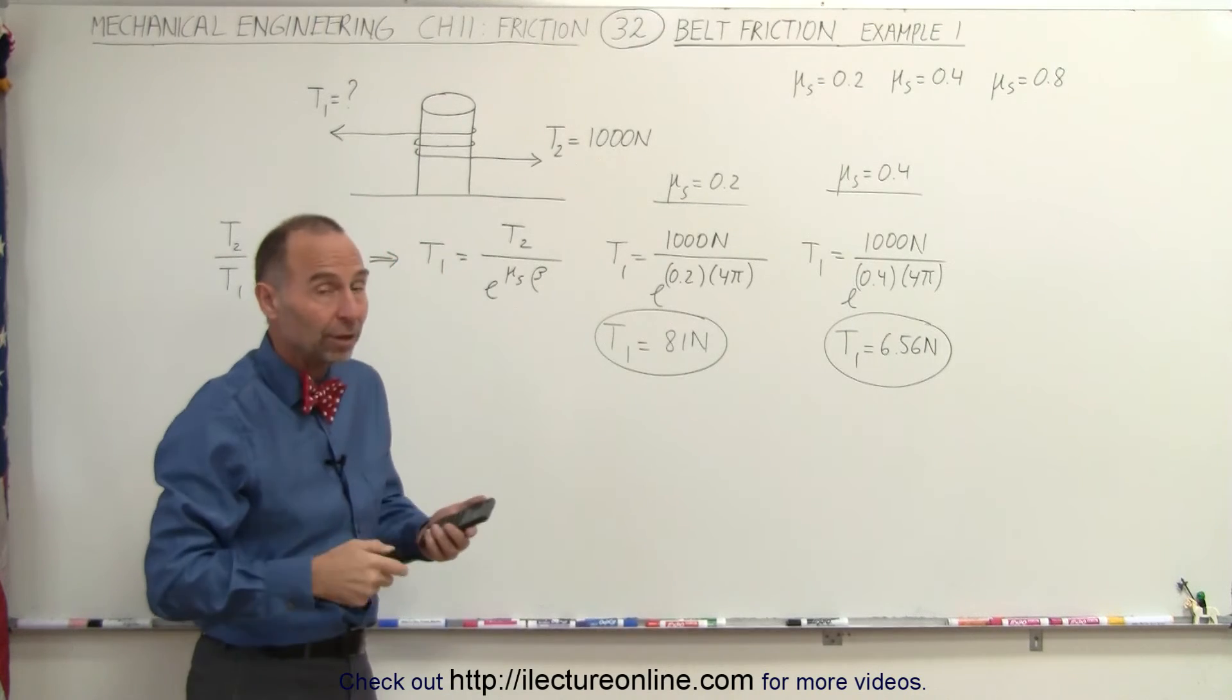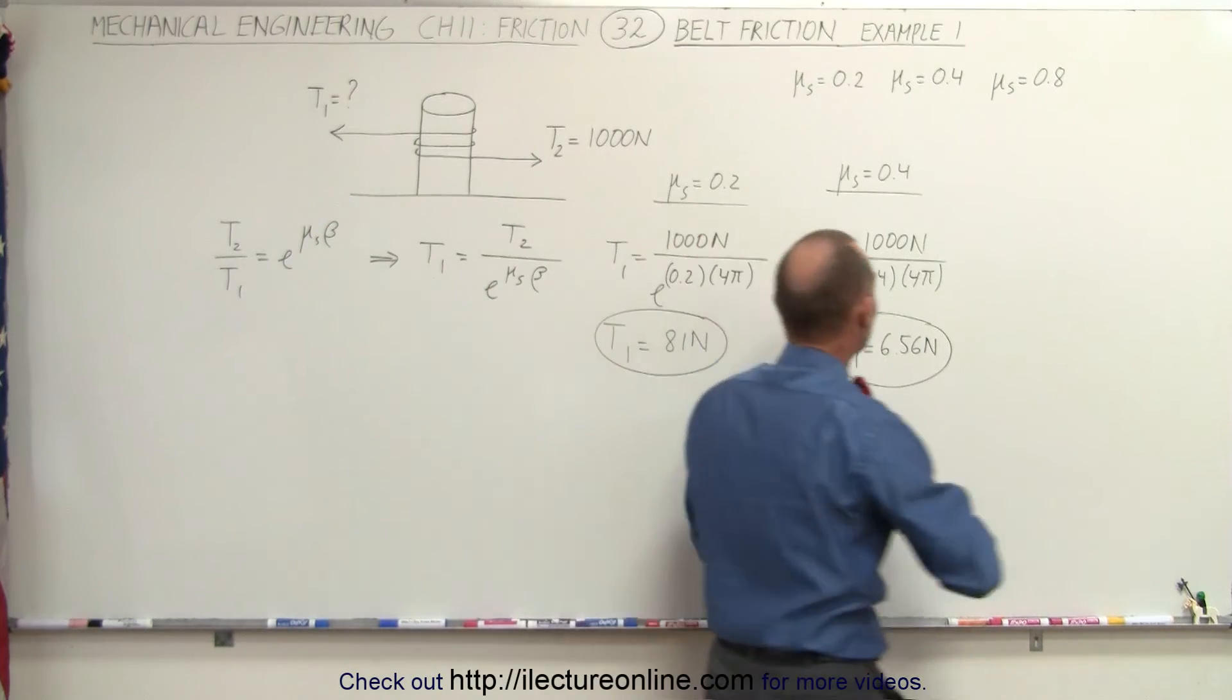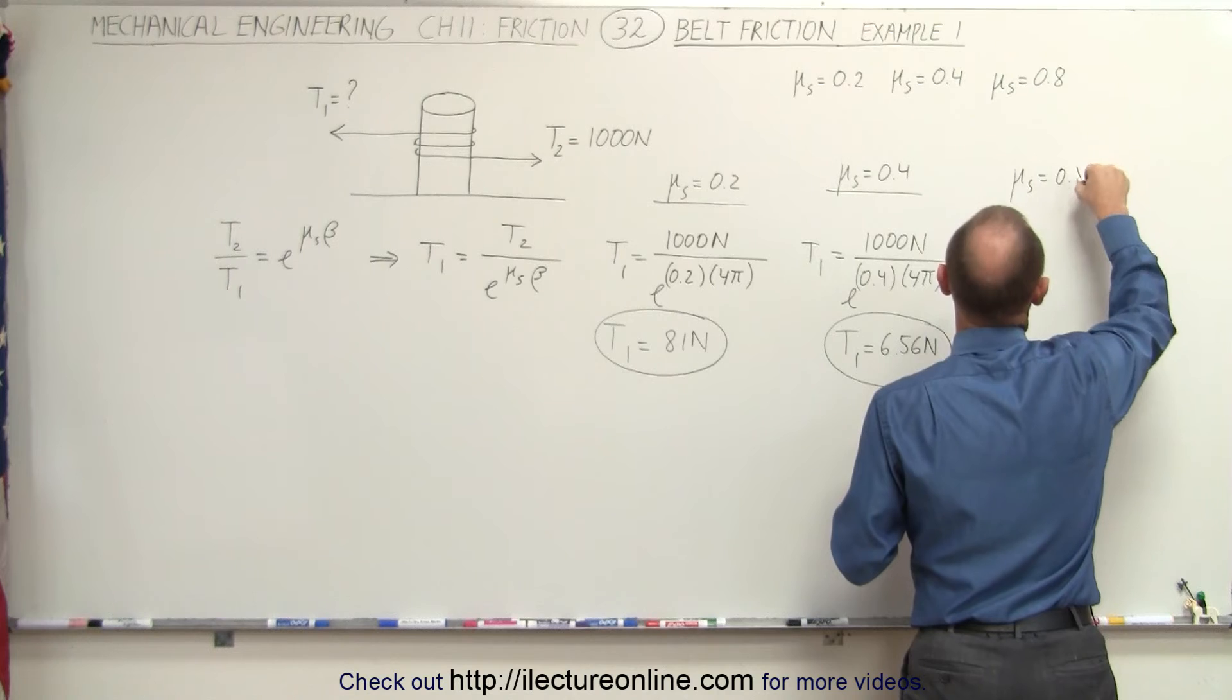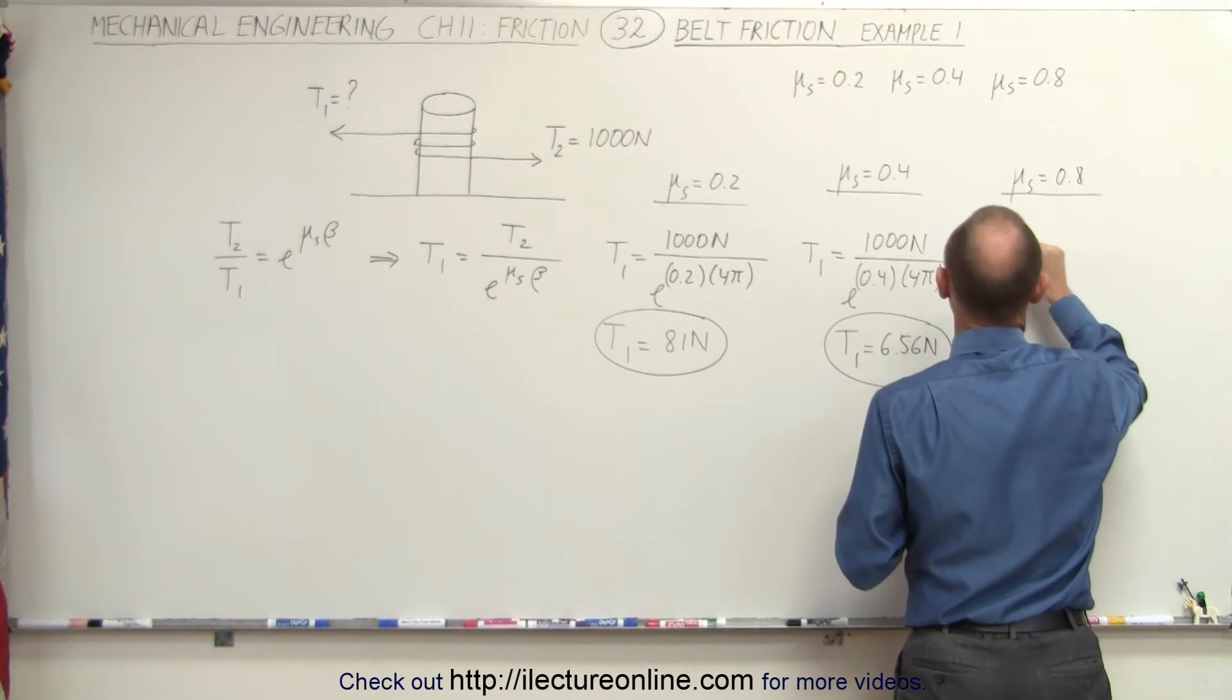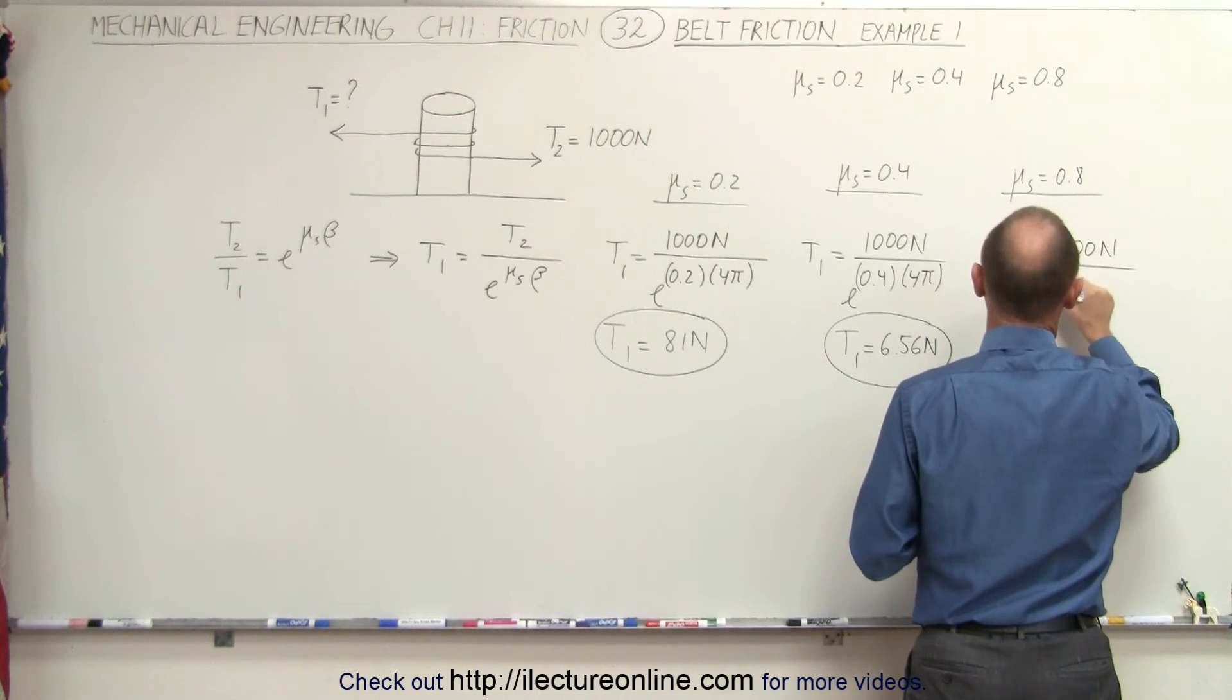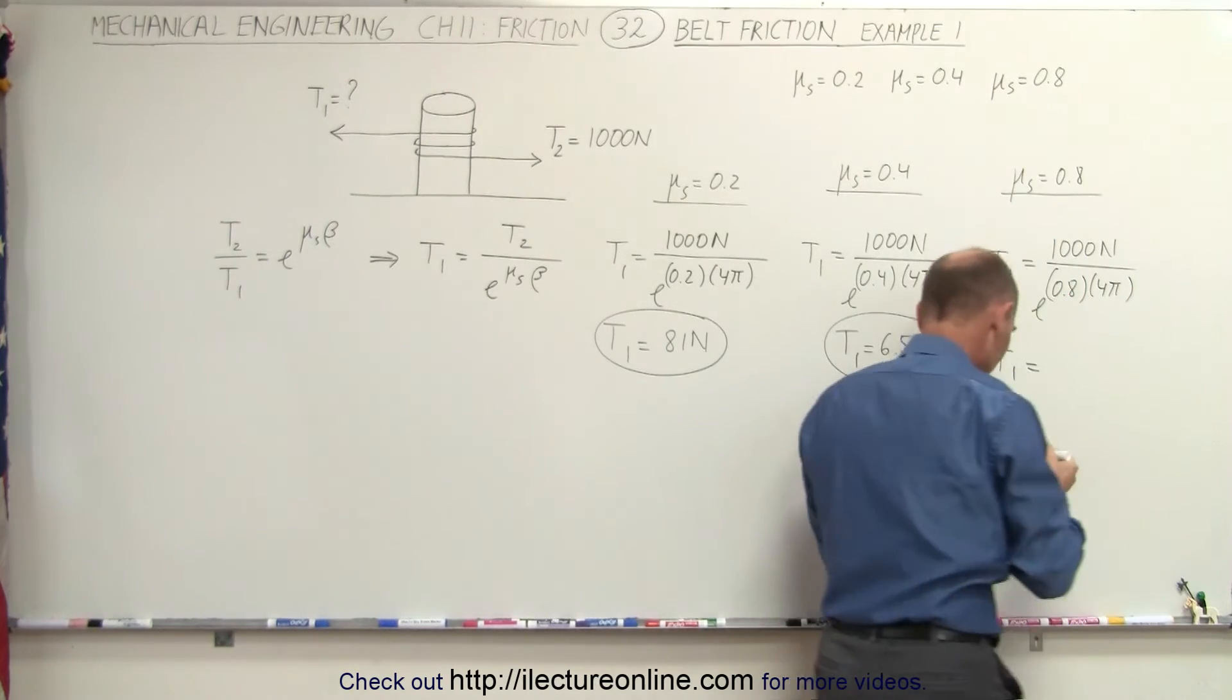Now let's go one more. Let's say the coefficient of friction is 0.8. That's not a usual case but just to see how this works. Let's try μₛ equals 0.8. That gives us T1 is equal to 1,000 newtons divided by e to the 0.8 times 4π.